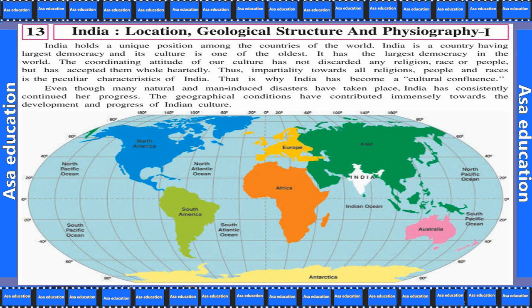India holds a unique position among the countries of the world. India is a country having the largest democracy and its culture is one of the oldest. The coordinating attitude of our culture has not discarded any religions, states or people but has accepted them wholeheartedly. Thus, impartiality towards all religions, people and races is the peculiar characteristic of India.